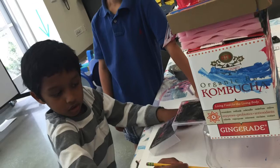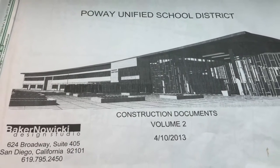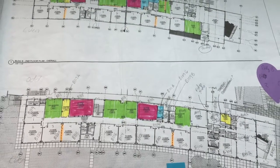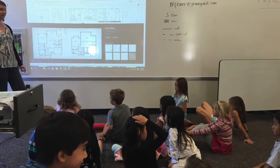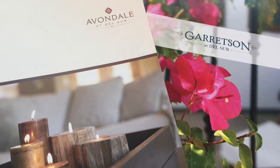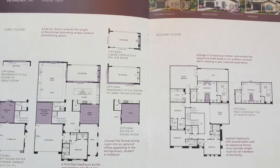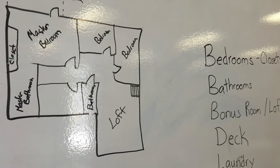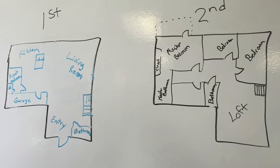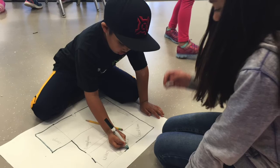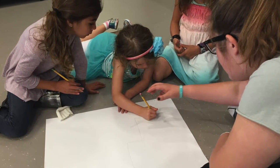We traced the bottom perimeter of our house. Then we started learning about floor plans with the floor plans of our school. We looked at floor plans of model homes around us, and then started to design our own floor plans. We learned how to draw a floor plan that we could walk all our fingers through.